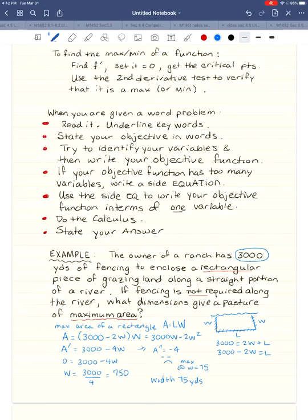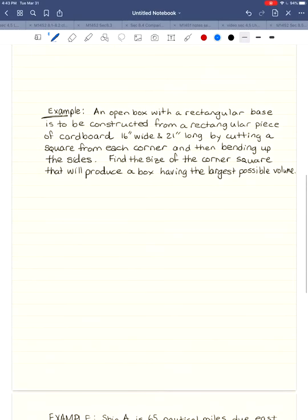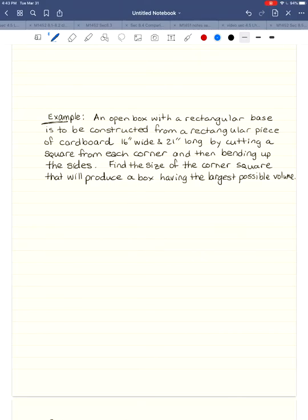What dimensions give a pasture of maximum area? And so my answer is, I want the width to be 750 yards, and the length to be, well we go back up in here, 3,000 minus 2 times 750 is 1,500, so that makes the length 1,500 yards. 750 yards by 1,500 yards. By the way, I've got all of these problems typed up on a worksheet and their solutions posted on Blackboard, so you don't have to go back through the video if you don't write all this down. They're all written out for you on Blackboard, with an additional problem that I did not include on this video. Okay, let's go on to the next one then.